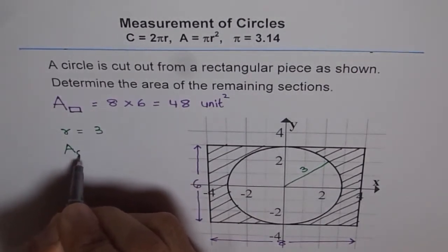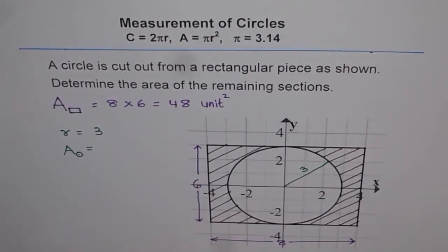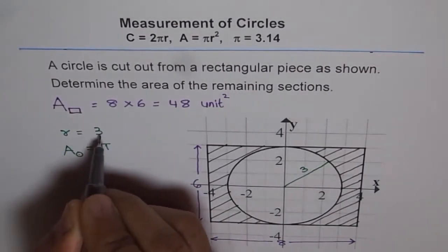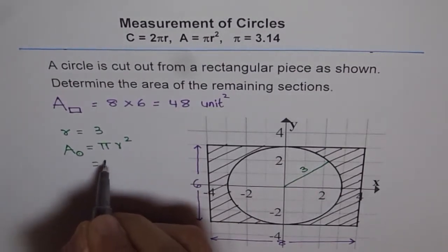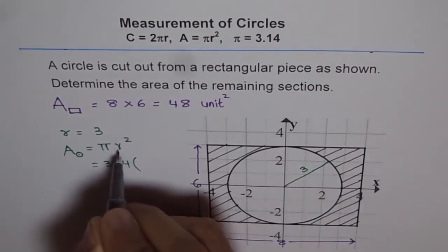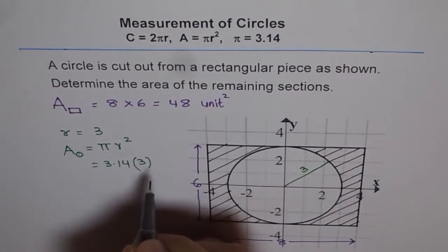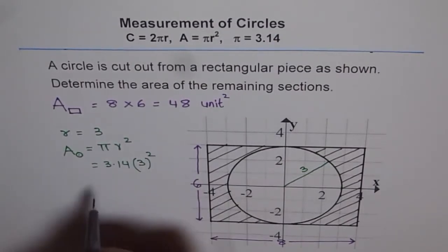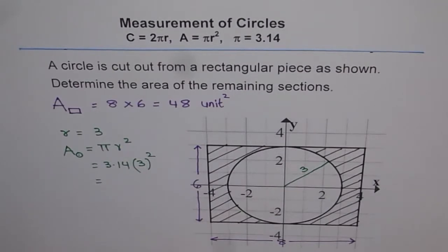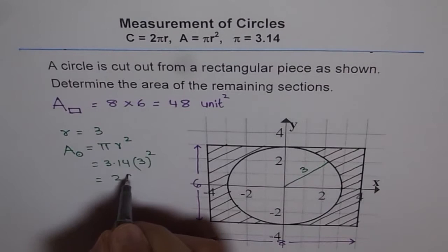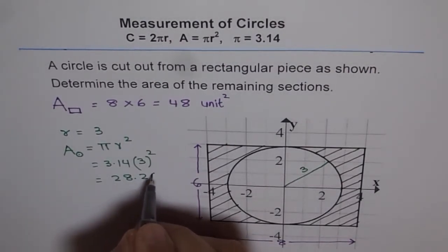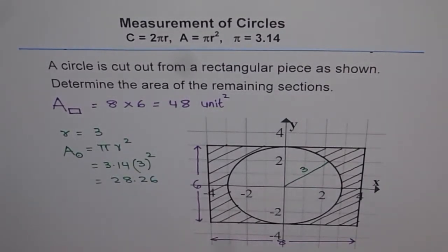Therefore, area of the circle is going to be pi times 3 square – pi r square. The value of pi is 3.14, and r for us is r equals 3, so 3 square. We can calculate using the calculator. We get 3.14 times 3 square is 9, so we get 28.26. That is the area of circle.